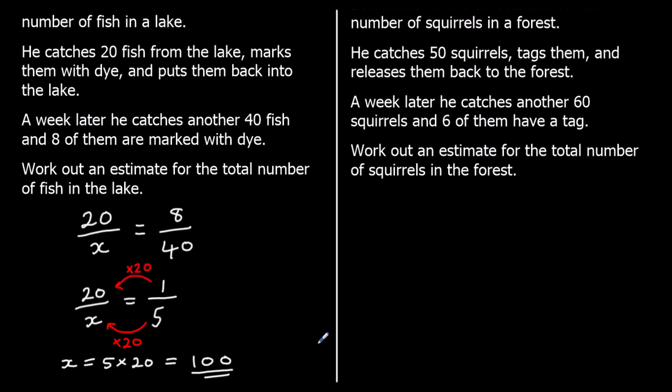We might be asked what assumption we made. And the assumption is that, well one of the assumptions we can use, is that none of the dye has rubbed off. All the dye has stayed on the fish. If the dye had rubbed off the fish, then this number 8 would have been bigger, and our estimate would be an overestimate. There would actually be less than 100 fish.